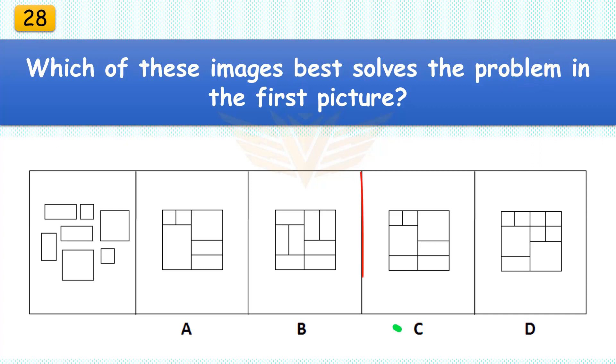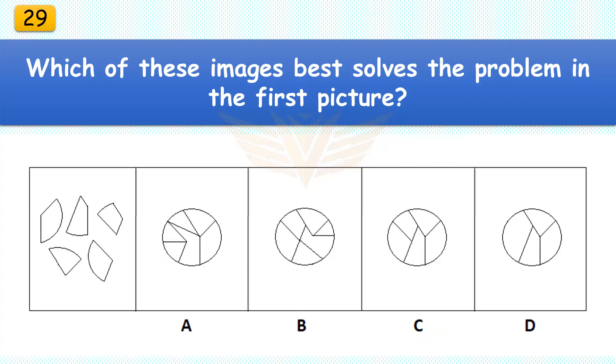Which of these images best solves the problem in the first picture? The correct answer is C. There are seven pieces in the assembled puzzle.